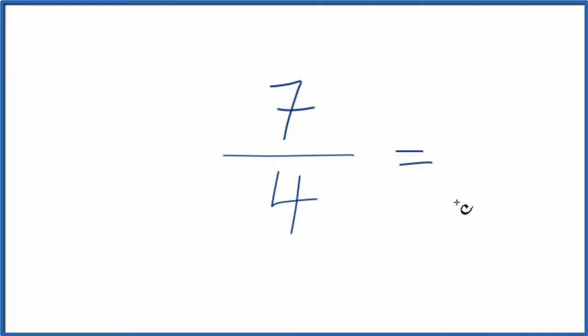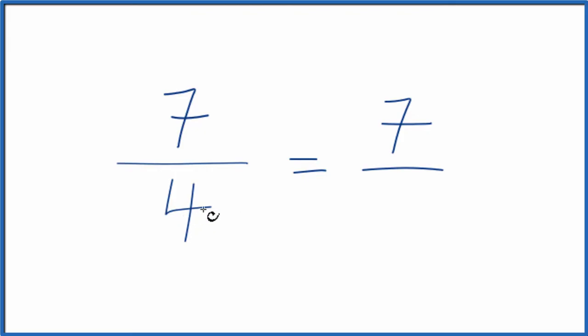So what we need to do is find a common factor, the greatest common factor, something that goes into 7 and 4. The only thing that goes into 7 and 4 is 1. So if I divide 7 by 1, I get 7. If I divide 4 by 1, I get 4. That's what we started with. So the fraction 7/4 is already simplified and can't be reduced any further.